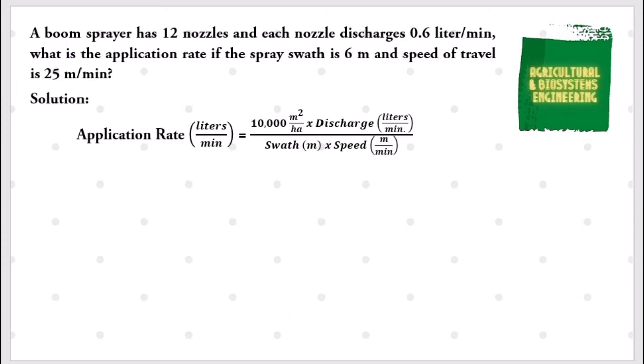Now to solve for the total nozzle discharge rate, we have to just multiply the number of nozzles and the discharge rate. We already know the values as stated in the problem, so we just simply use direct substitution. We have total nozzle discharge equals 12 multiplied by 0.6 liters per minute. We simply solve and we have 7.2 liters per minute.